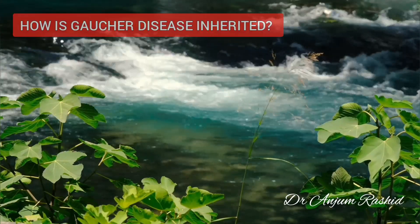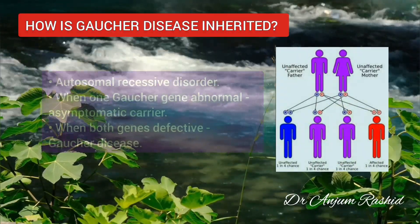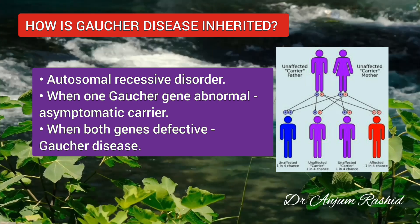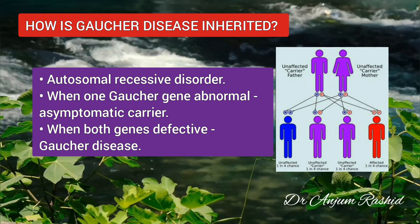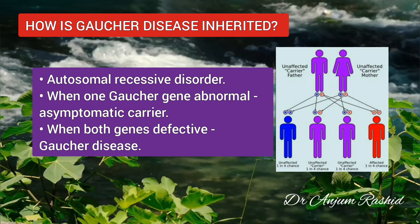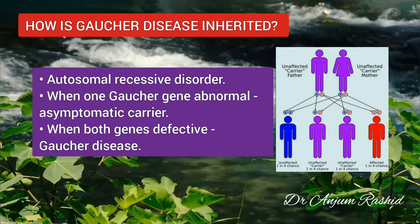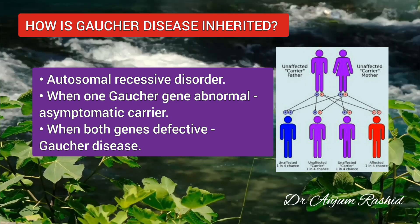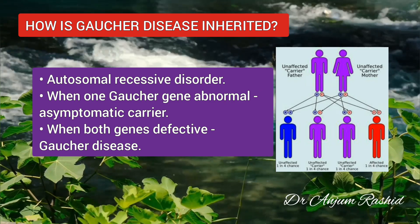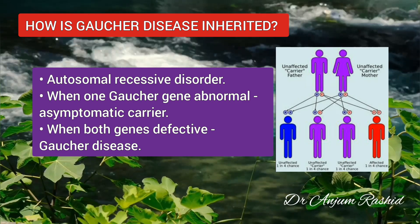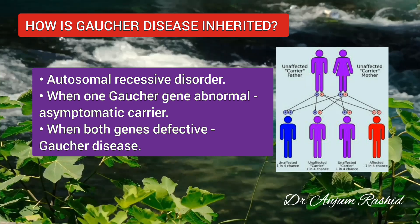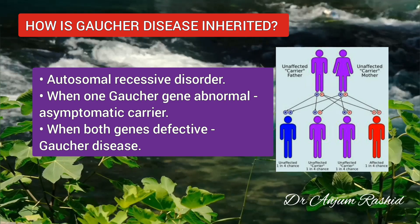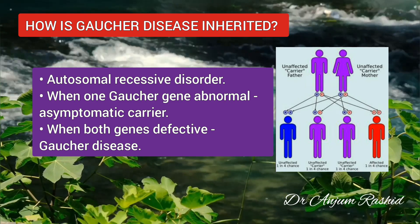How is Gaucher disease inherited? It is an autosomal recessive disorder, meaning a person must receive the Gaucher gene from both parents in order to have the disease. Most genes exist in pairs, with one coming from the mother and the other from the father. When one Gaucher gene in the pair is abnormal, the child is an asymptomatic carrier, who can pass that abnormal gene to his or her children.